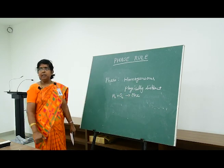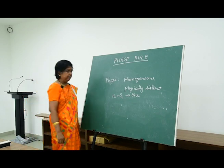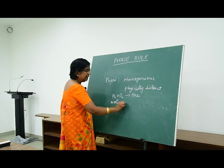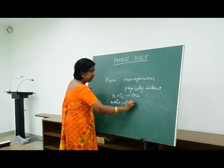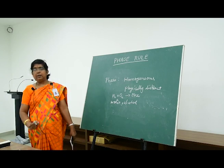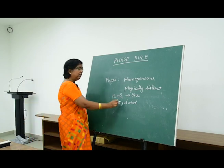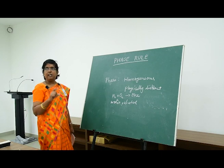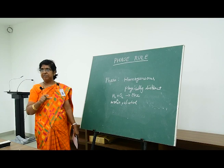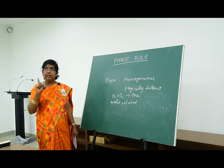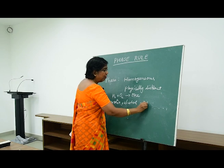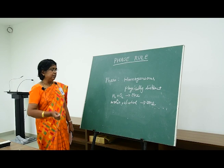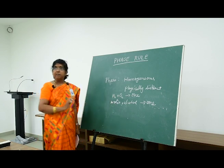Now I will take into account liquids. Consider any two liquids — for example, water and alcohol, meaning ethyl alcohol. Water and alcohol are completely miscible with each other. If you take 50 ml of water and 50 ml of alcohol and mix them, you will get a single homogeneous solution. You will not be able to distinguish between water and alcohol. These two are called completely miscible liquids.